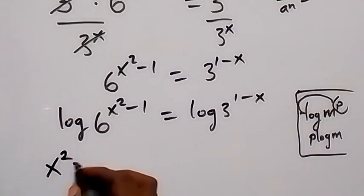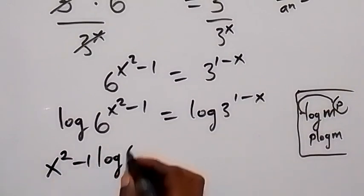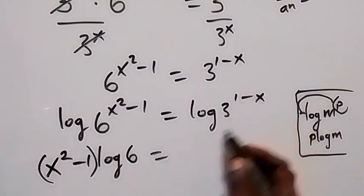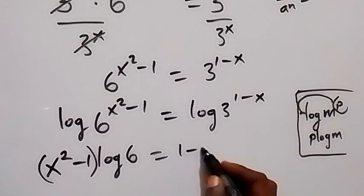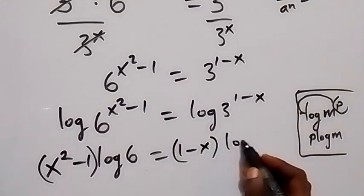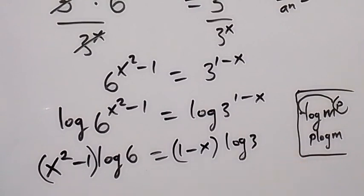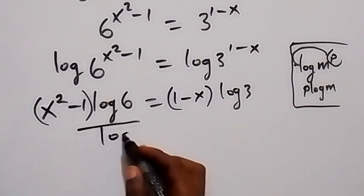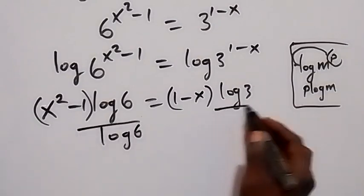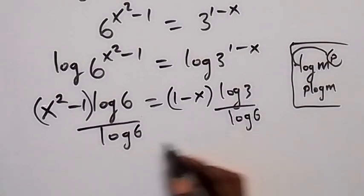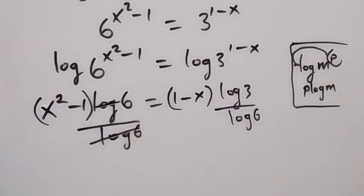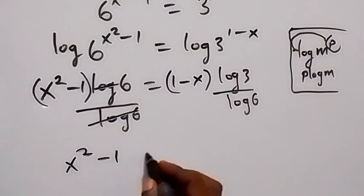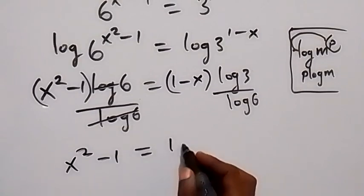Applying the power log rule, we get x squared minus 1 times log 6 equals 1 minus x times log 3. Now let's divide both sides by log 6 so that log 6 cancels, leaving x squared minus 1 equals 1 minus x times log 3 base 6.